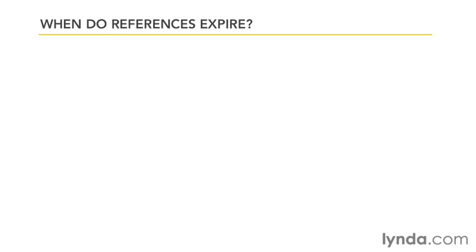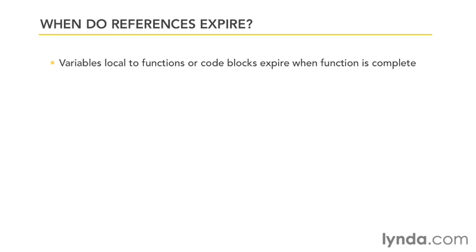There are two models that you can look at. First of all, when you declare a variable that's local to a function or to a code block, as soon as the function or code block is done executing, that variable is no longer available to you, and so it has expired and is eligible for garbage collection.